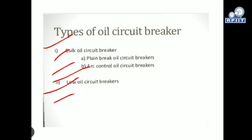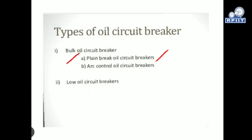There are two main categories of oil circuit breaker: the bulk oil circuit breaker and the low oil circuit breaker. The bulk oil circuit breaker is further divided into two parts: the plain break oil circuit breaker and the arc control oil circuit breaker. These will be discussed in further slides.